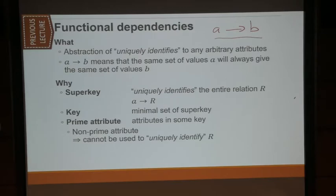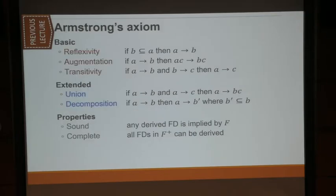That's why we are interested in non-prime attributes. The computation of this only relies on algorithm one, which is the computation of the attribute closure. We also learned about the Armstrong axioms with the extended version, which adds two more things: union and decomposition. These two can be derived from the basic Armstrong axioms.